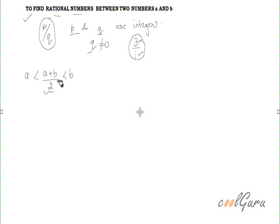I will take one example. Say I have to insert a rational number between minus 1 and 4. This is A and this is B. Using this formula I will get minus 1 plus 4 divided by 2, that is equal to 3 by 2. So 3 by 2 is between minus 1 and 4.